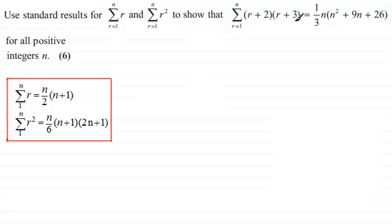So how do we use these results then? Well, let's start by putting down the question first of all. And that is that we've got sigma r going from 1 to n of r plus 2 times r plus 3.